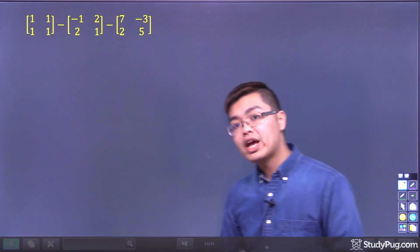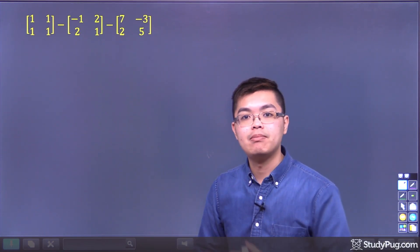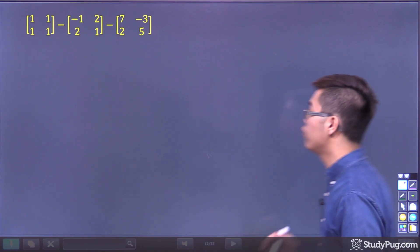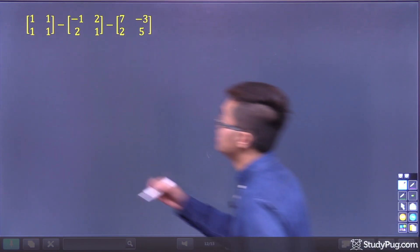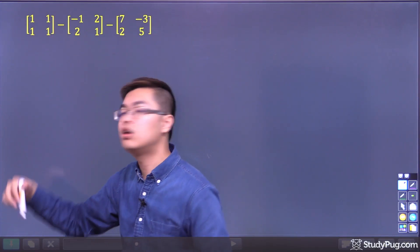All right, so we got three matrices as you can see, and in order to add and subtract matrices, you got to make sure that they all have the same dimensions. If you look at the first matrix, this is clearly a 2 by 2. It has two rows and two columns.